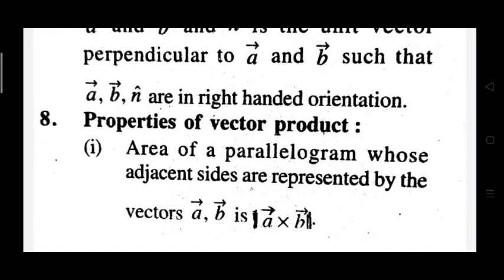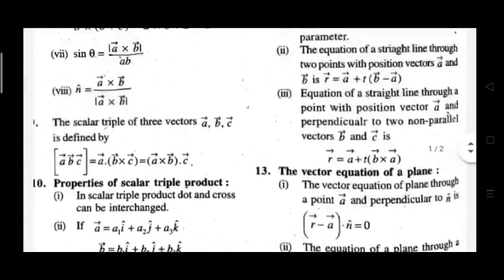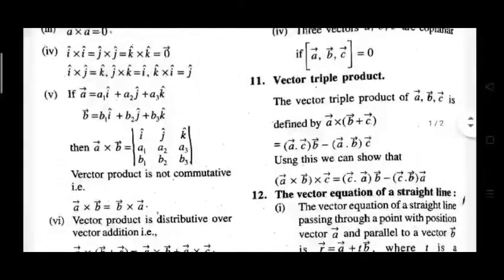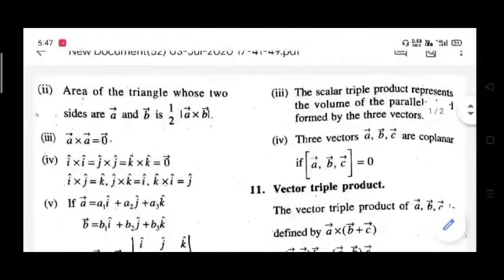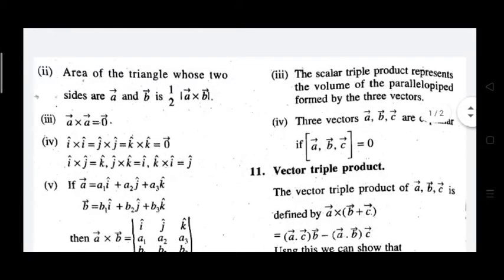We are going to study the parallelogram area. Where the adjacent sides are the same, the parallelogram area equals the modulus of A cross B. The area of a triangle with sides A vector and B vector is also derived from this.